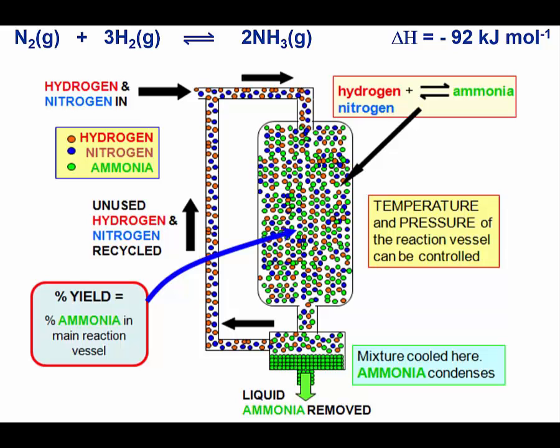As the reaction is exothermic, heating will push the equilibrium in the reverse direction. This would cause a lower yield of product to be produced, but because the speed increased due to the catalyst, the rate of reaction increased also due to the higher temperature, and the recycling of leftover reactants, the balance is usually found to be around 450 degrees Celsius.